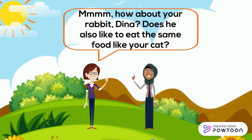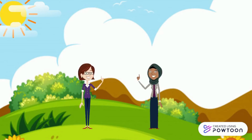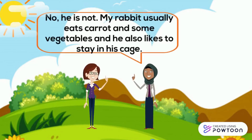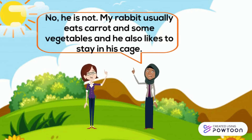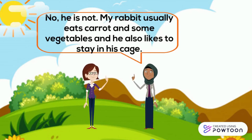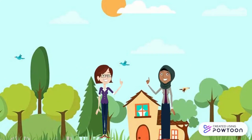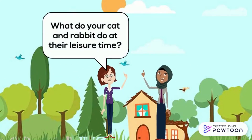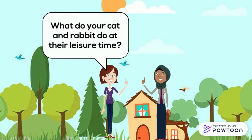How about your rabbit, Dina? Does he also like to eat the same food as your cat? No, he does not. My rabbit usually eats carrots and some vegetables, and he also likes to stay in his cage.